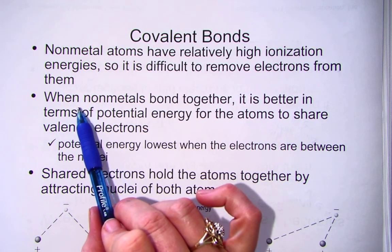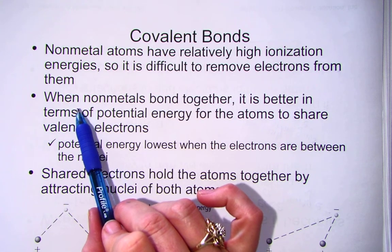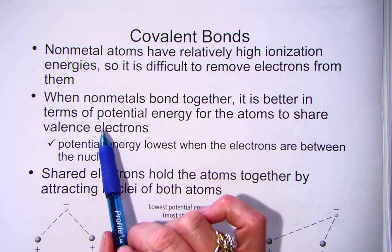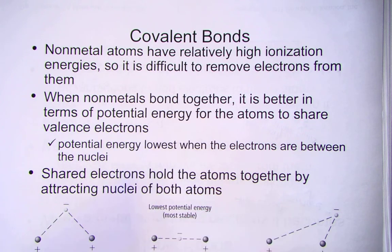It's easier to share their outer electrons to create that stable energy level called an octet, the eight that every atom so desires to have in its outer shell.